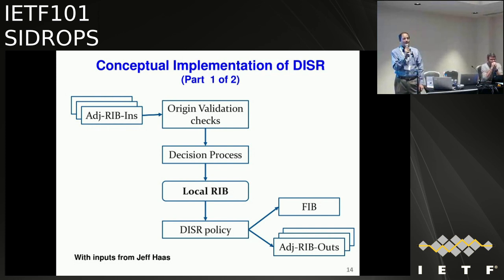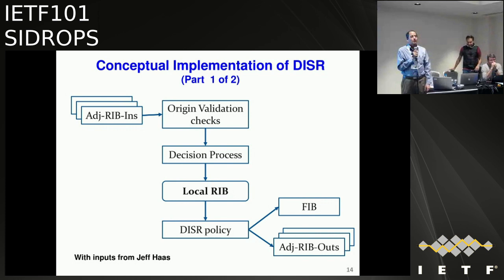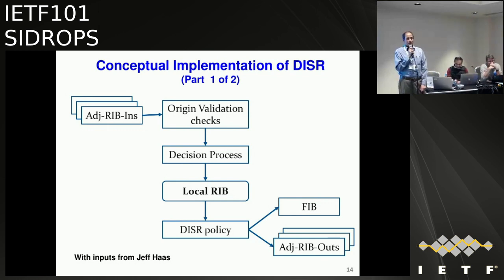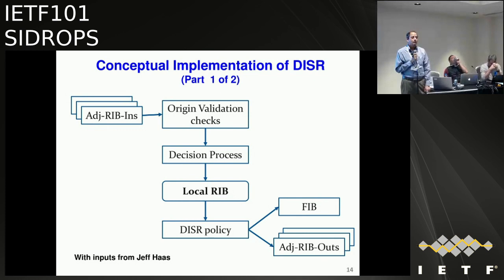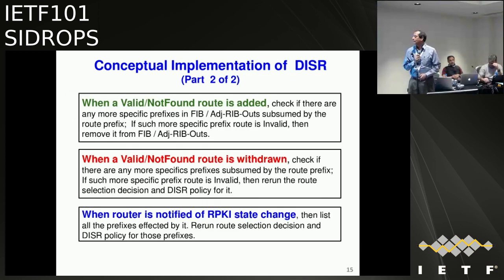Warren, no hats. Let's say I end up with an invalid /24 and there's a covering /20 that is not-found. I then hide the /24 because it's currently invalid. When the covering route goes away and comes back, it sounds like I have a fair bit of work to do. The amount of work sounds substantial.